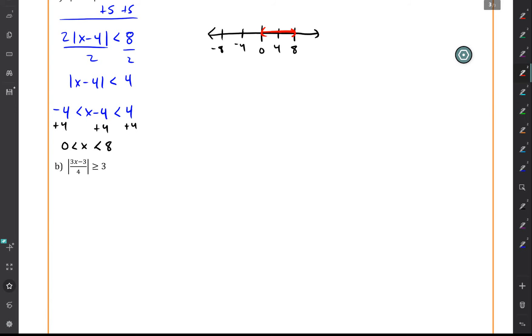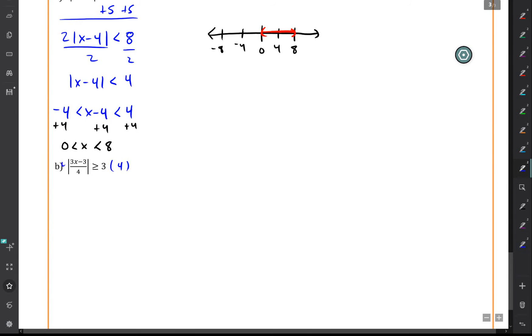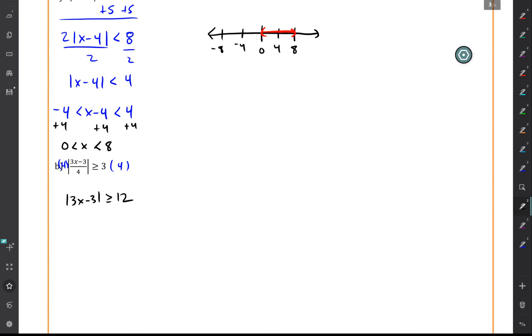So we're going to start off by multiplying both sides of this inequality by 4. That'll allow us to simplify this down to the absolute value of 3x minus 3 is greater than or equal to 12. So multiplying by a positive number isn't going to change that inequality.